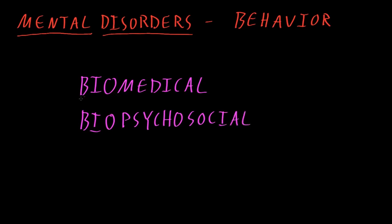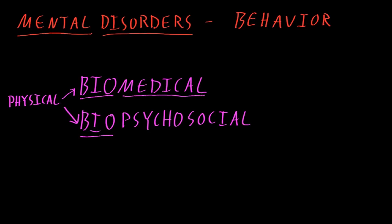The 'bio' part of both terms is short for biological, or physical abnormalities — things like abnormalities in the molecules of brain cells that affect how they function, or abnormal patterns of connections between neurons. The biomedical approach really focuses on these physical, biological abnormalities. The biopsychosocial approach also considers physical abnormalities that may contribute to the cause or be useful for classifying a mental disorder.